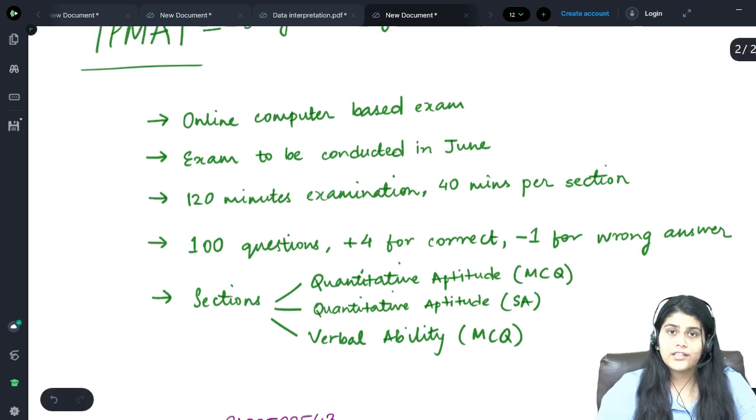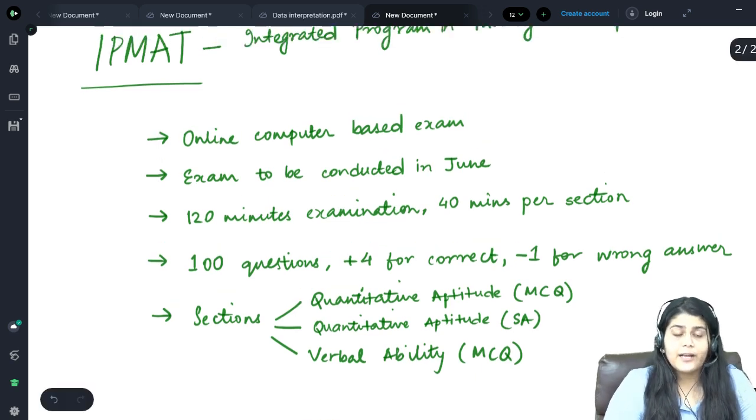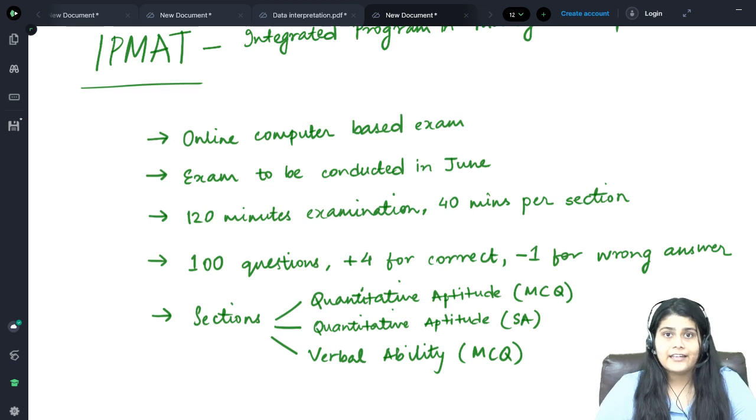Each of these 3 sections will be available only for 40 minutes and the total will come to 120 minutes. There will be 100 questions in all divided as 40-40-20 and for every correct answer there will be a plus 4. And for every wrong answer there will be a minus 1.